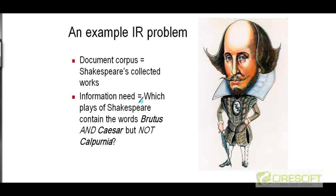Now let's assume that you have an information need. You want to find out which plays of Shakespeare contain the words Brutus and Caesar but not Calpurnia. We are going to try and build an information retrieval system from the ground up which will try to answer questions of this form — that is, it's going to return the names of the plays which contain Brutus and Caesar but which don't contain the name Calpurnia. Calpurnia was the wife of Caesar.